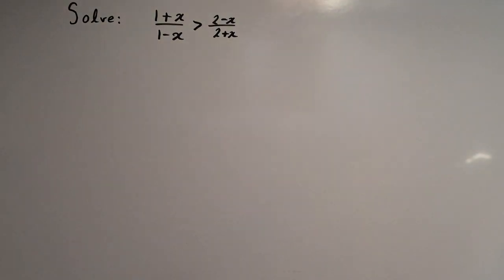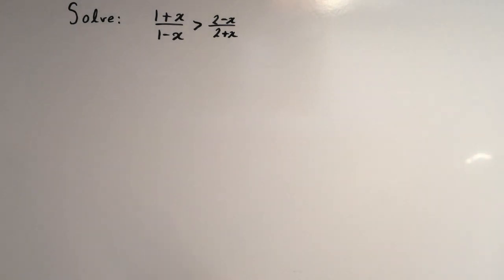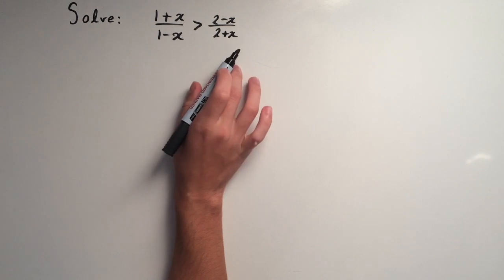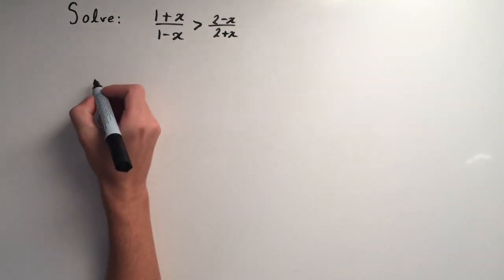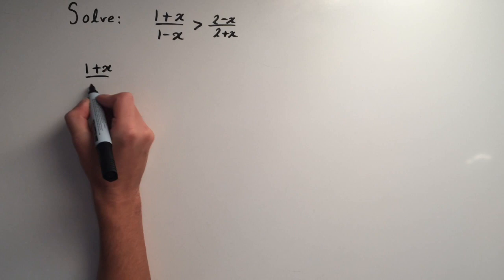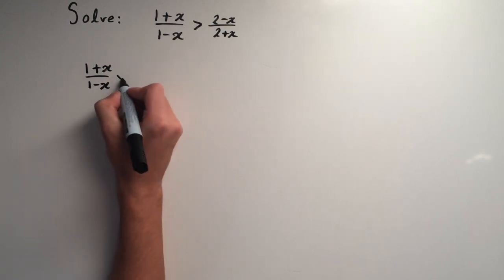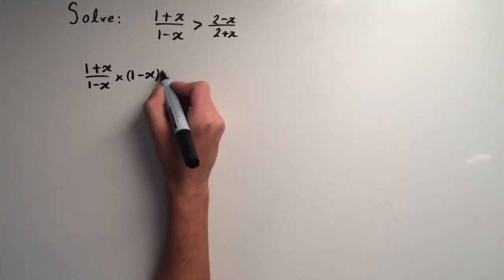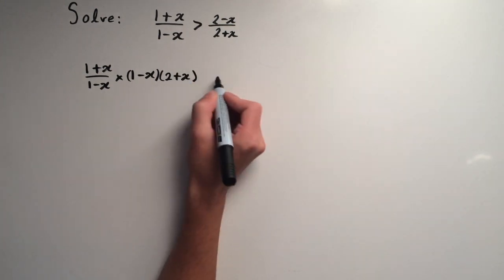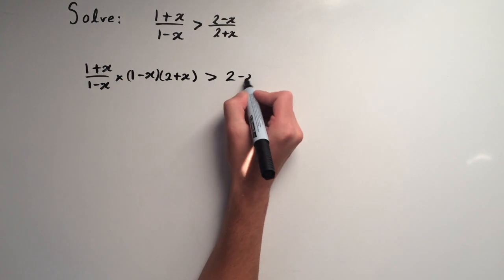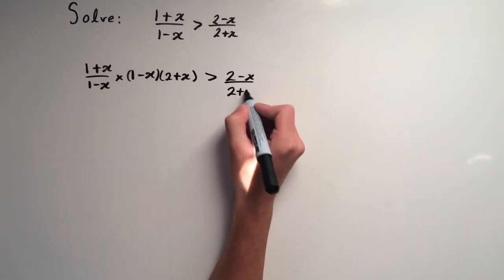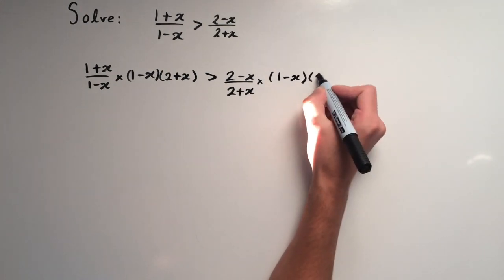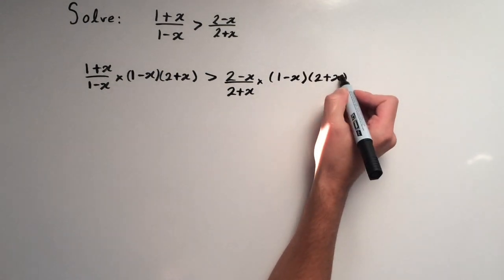In this video I'm going to show you how to solve this inequality. What we want to do is get rid of the denominators, so we need to multiply by both denominators on both sides. So (1+x)/(1-x) times (1-x) and (2+x), and this is greater than (2-x)/(2+x) times (1-x) times (2+x).